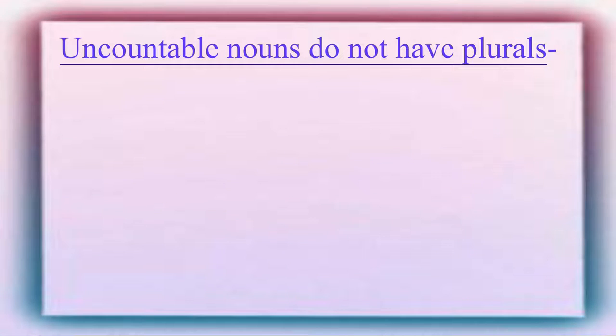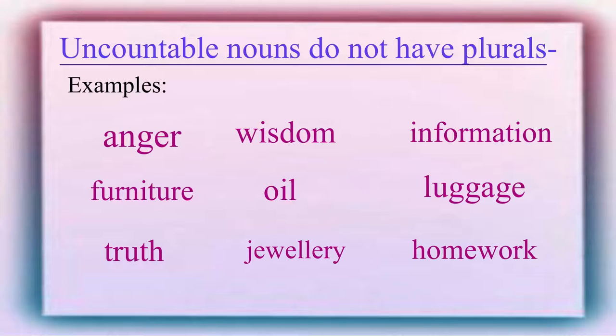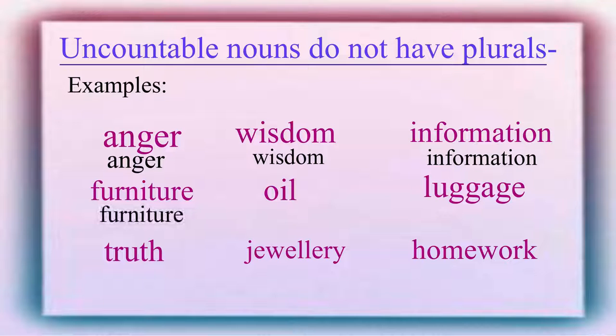Uncountable nouns do not have plural forms. That is because things which cannot be counted cannot have plurals. Please repeat these examples: anger, wisdom, information, furniture, oil.